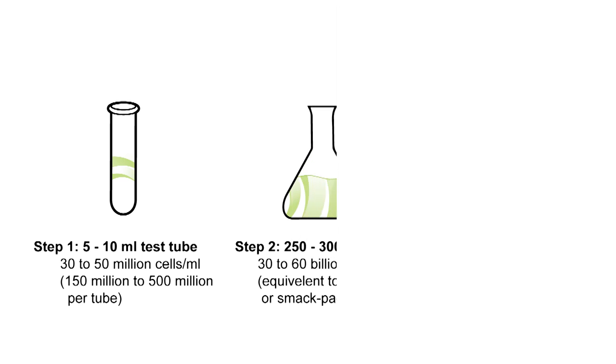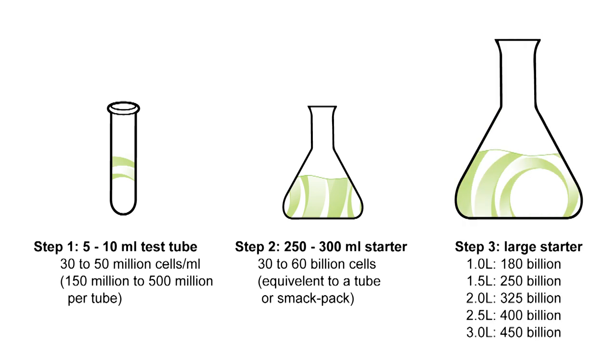You can now take that tube and you can add it to a starter that's between 250 to about 350 mils, so that's between a cup and a cup and a half. That starter would be your standard starter, ideally on a stir plate, although you can use a shaking method if you don't have a stir plate. And once that starter is completed you're roughly in the same place that you would be with a tube of yeast from White Labs or with a Wyeast smack pack, and you can then step that up to whatever size you need to then brew your beer.